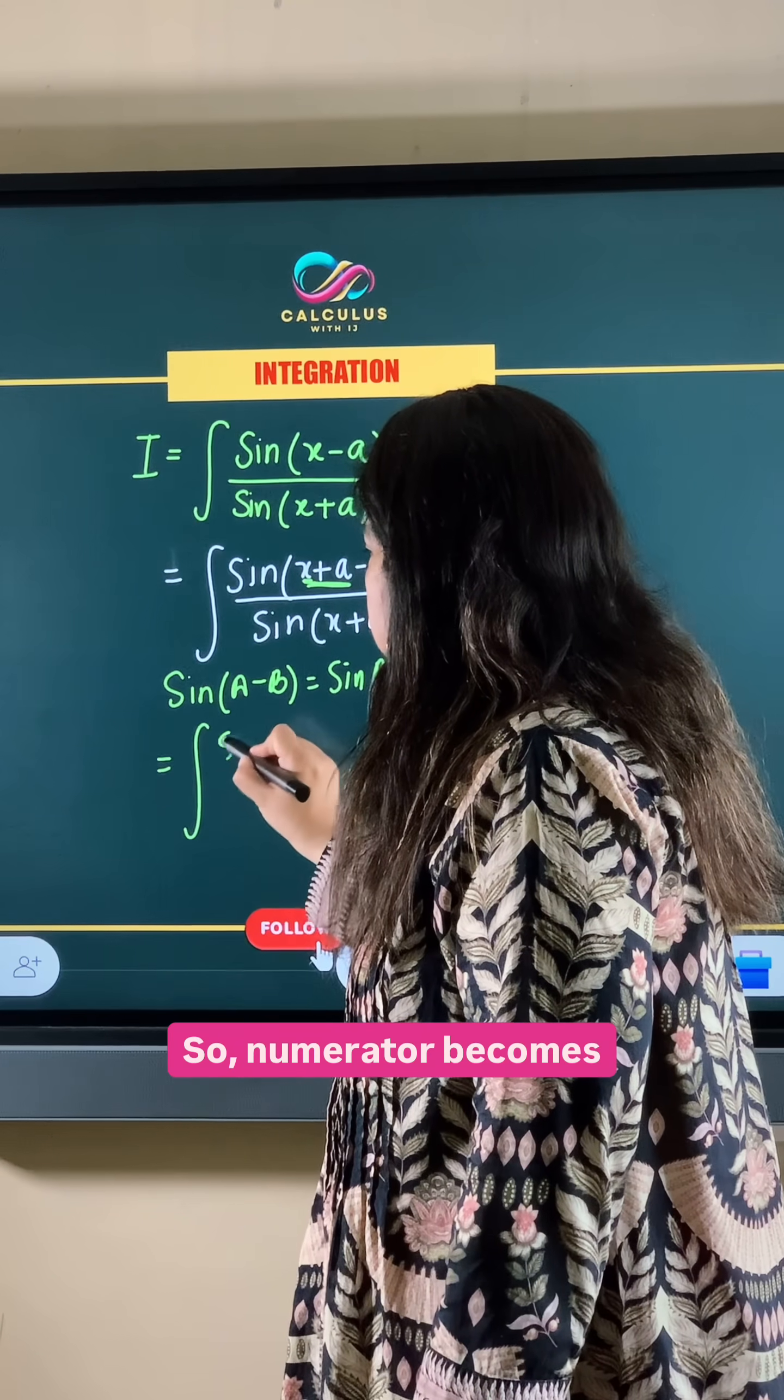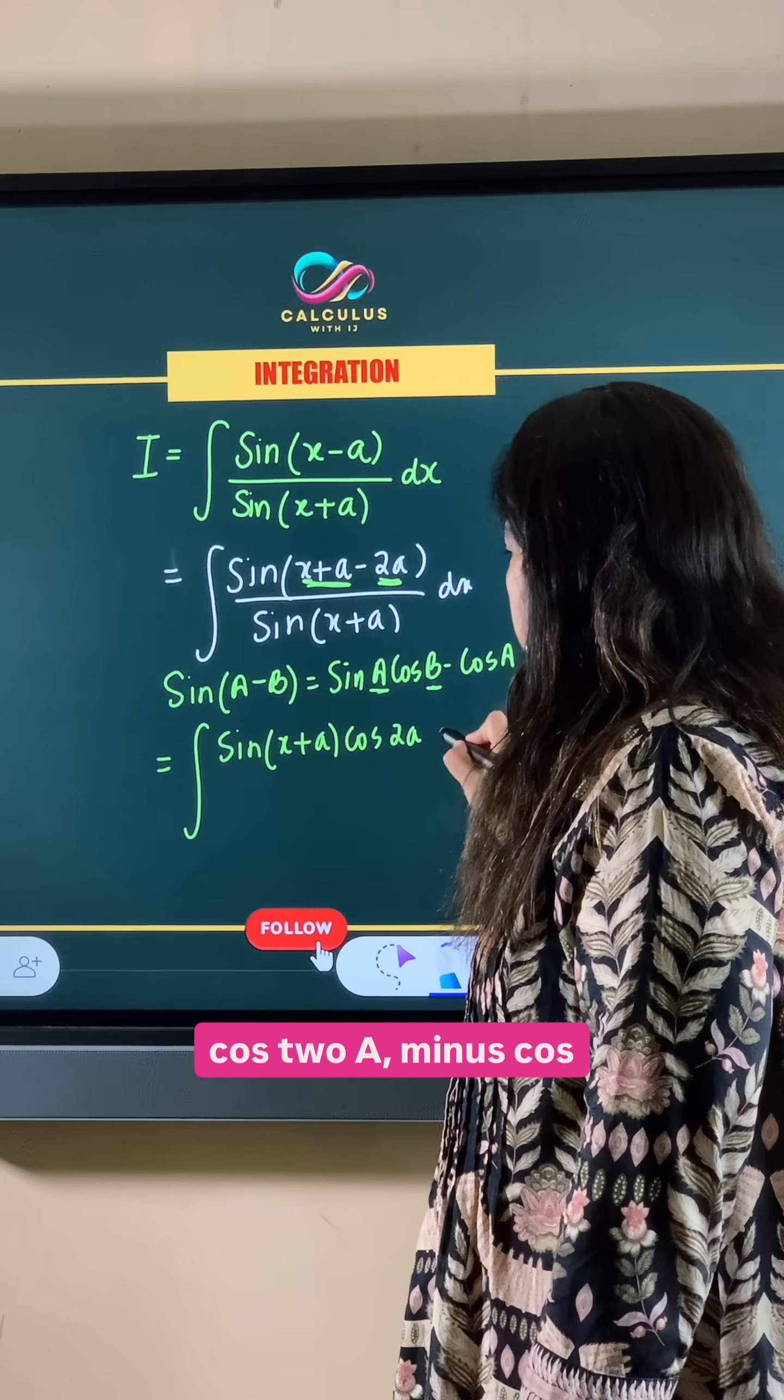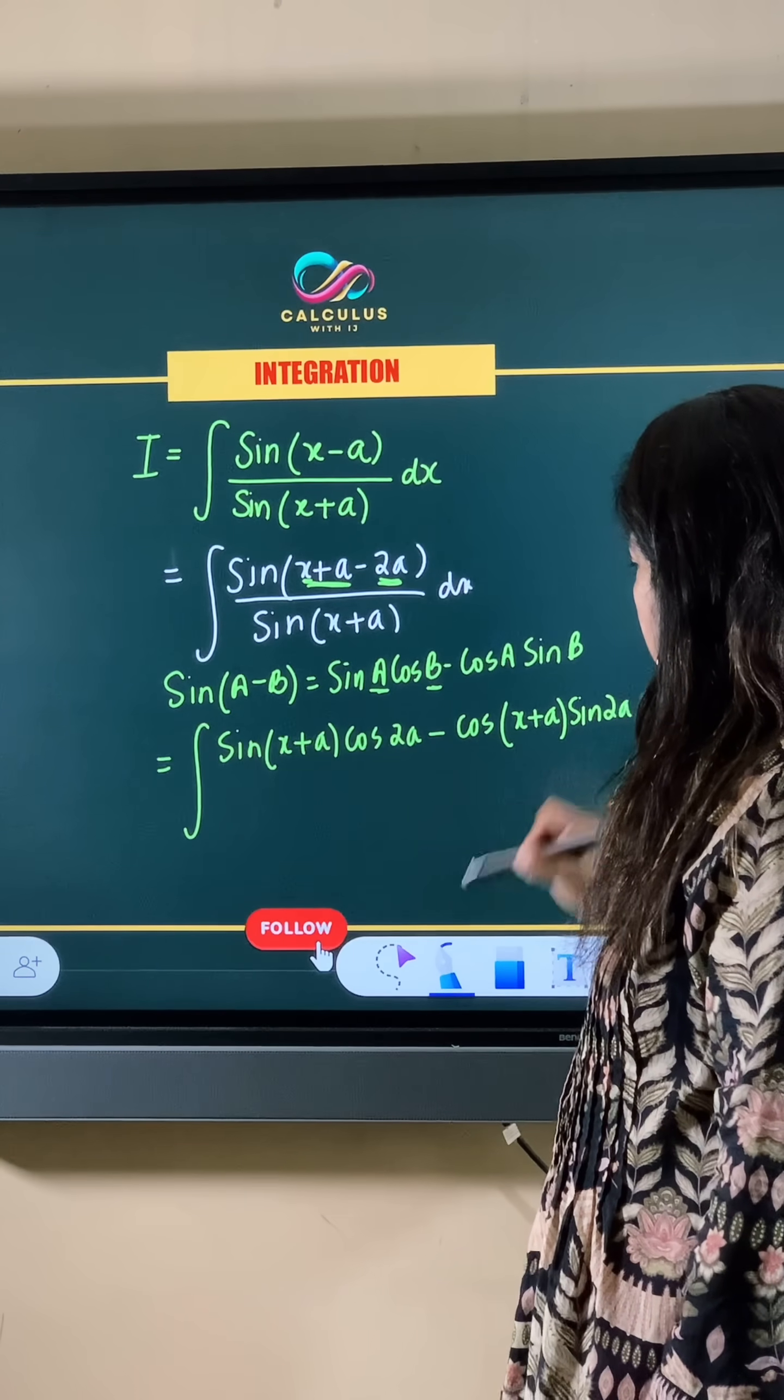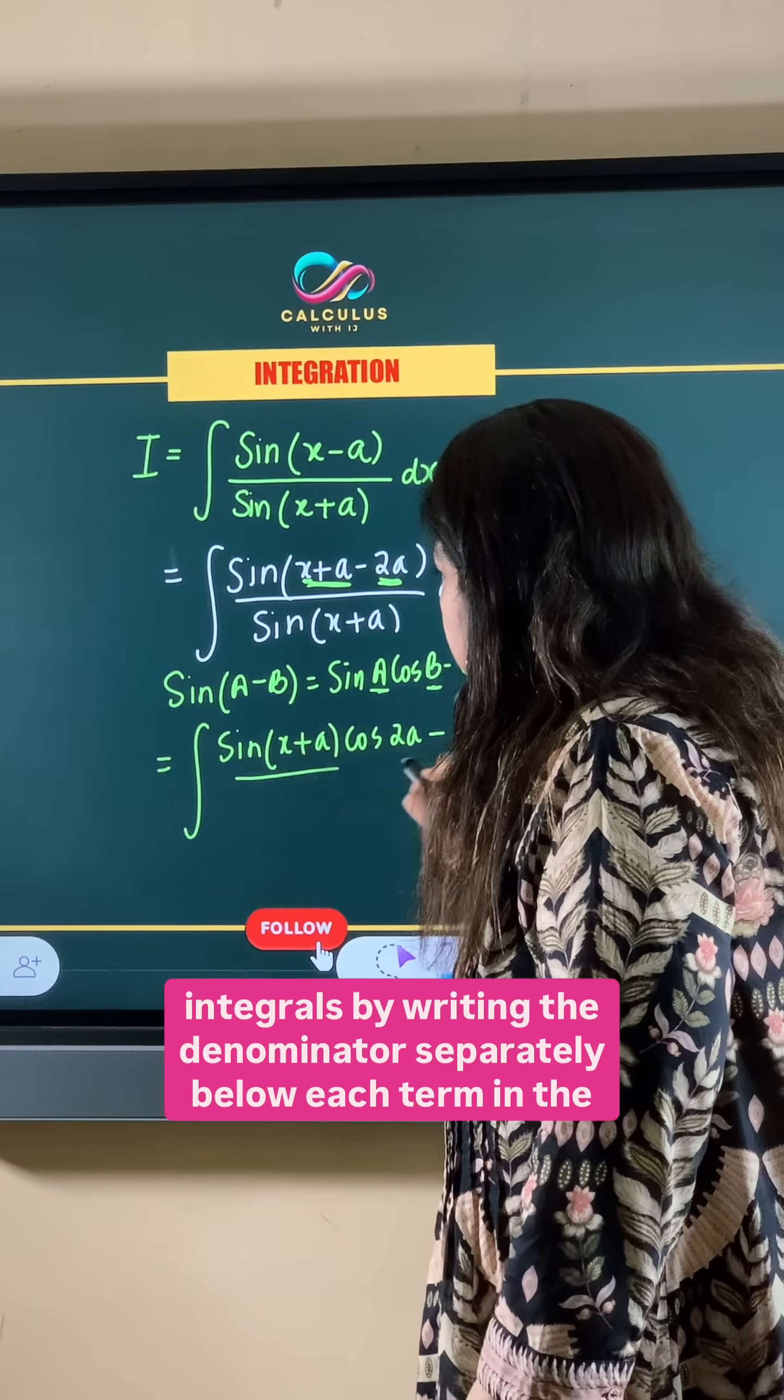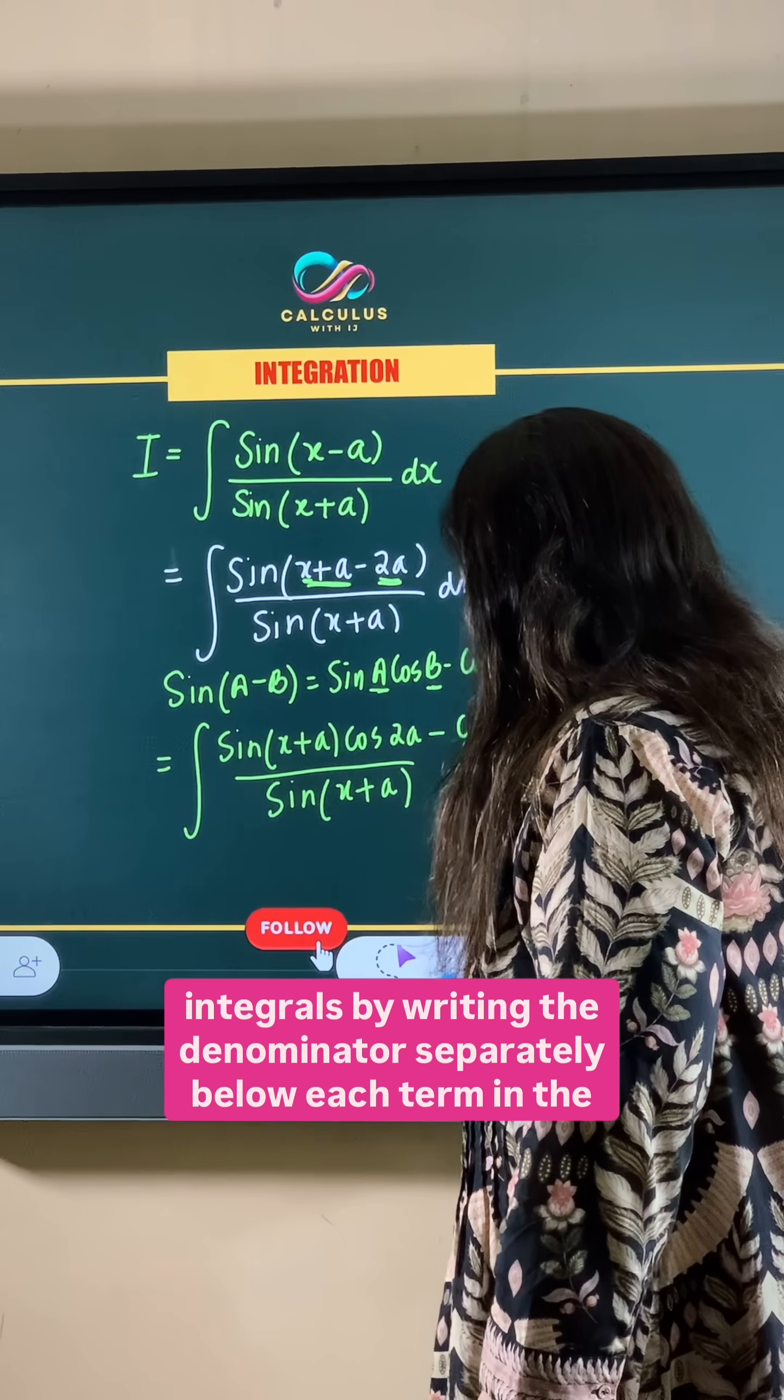So the numerator becomes sine x plus a cos 2a minus cos x plus a sine 2a. And along with writing the identity, we also split the integral into two integrals by writing the denominator separately below each term in the numerator.